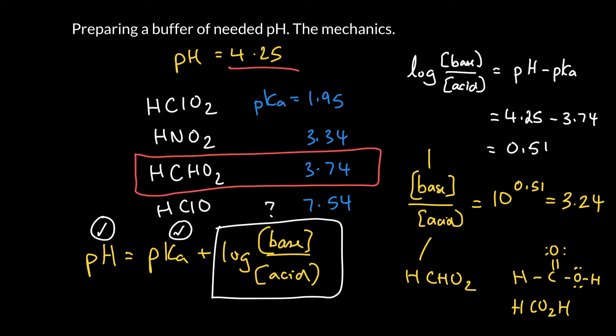Right. The base is the, not any old base, it's the conjugate base to formic acid. So we just have to remove a proton. So if we're looking at our proton, right, this is our acidic proton. And so all we're going to do is abstract that and remove that. So I'm going to write that as HCO2-. So we just need to get that ratio of those two compounds to be 3.24.